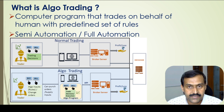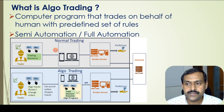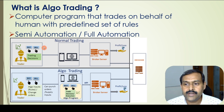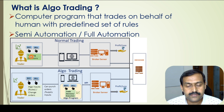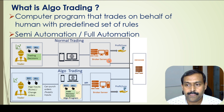Algo trading is nothing but a computer program that trades on behalf of us with a set of rules that we have supplied. It can be semi-automated or fully automated. Here is a diagram that illustrates normal trading versus algo trading. In normal trading, a trader makes all the buy and sell decisions and sends those orders through a computer or mobile phone to the broker server, which in turn sends those orders to the exchange.